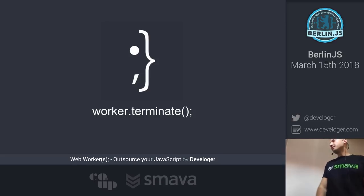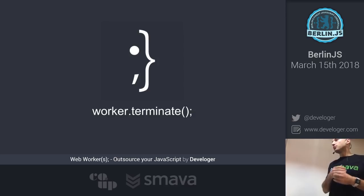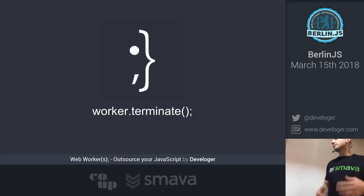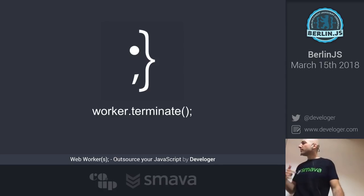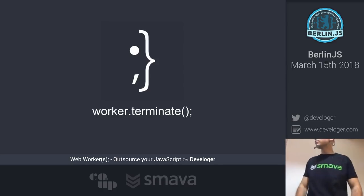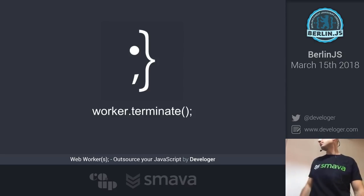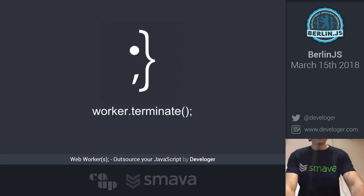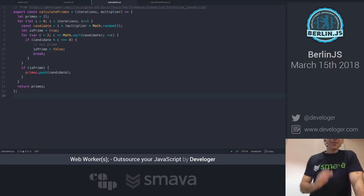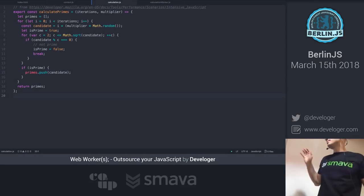To terminate a worker, you can simply call worker.terminate() from the main context of your application, or you can use self.close() from inside the worker itself — both methods serve the same purpose.